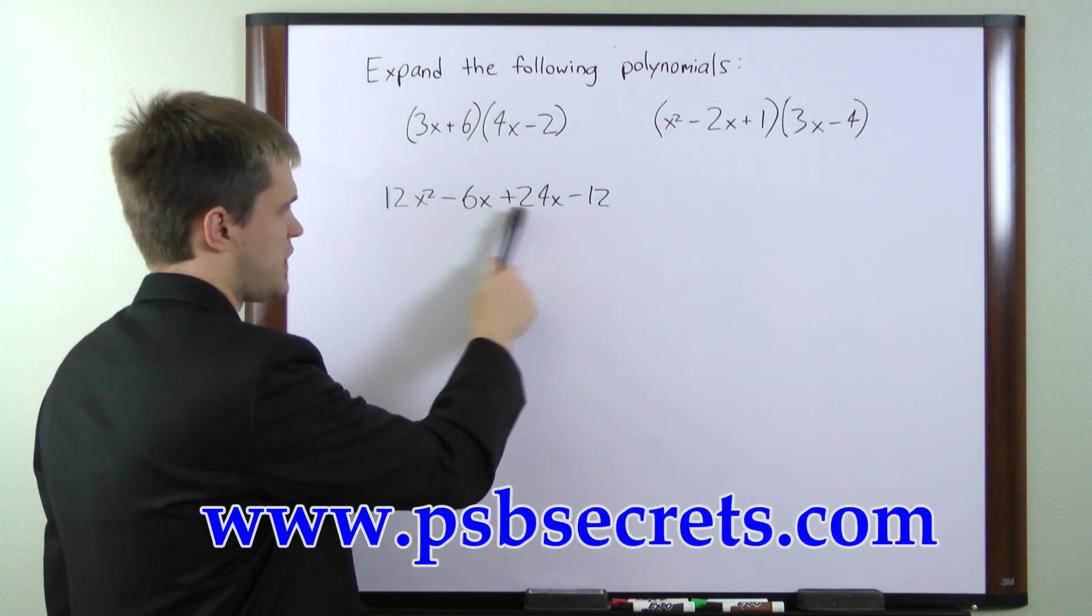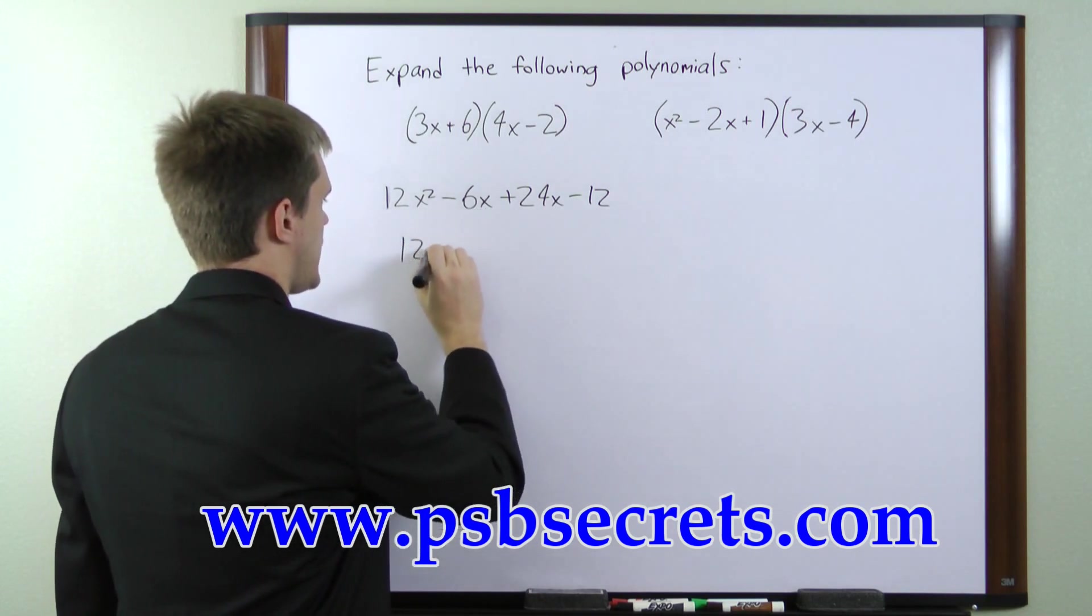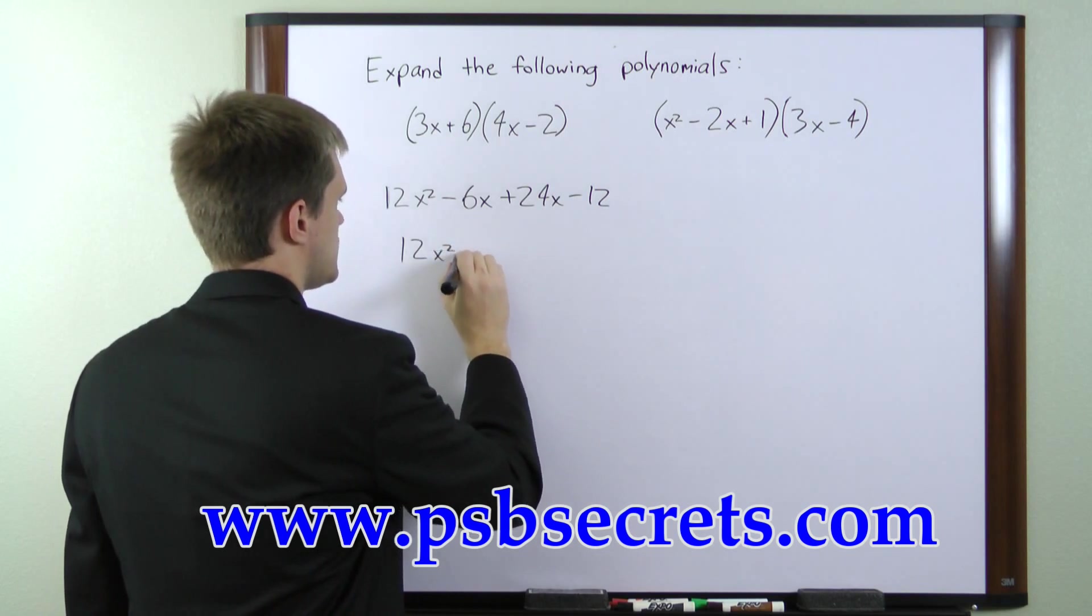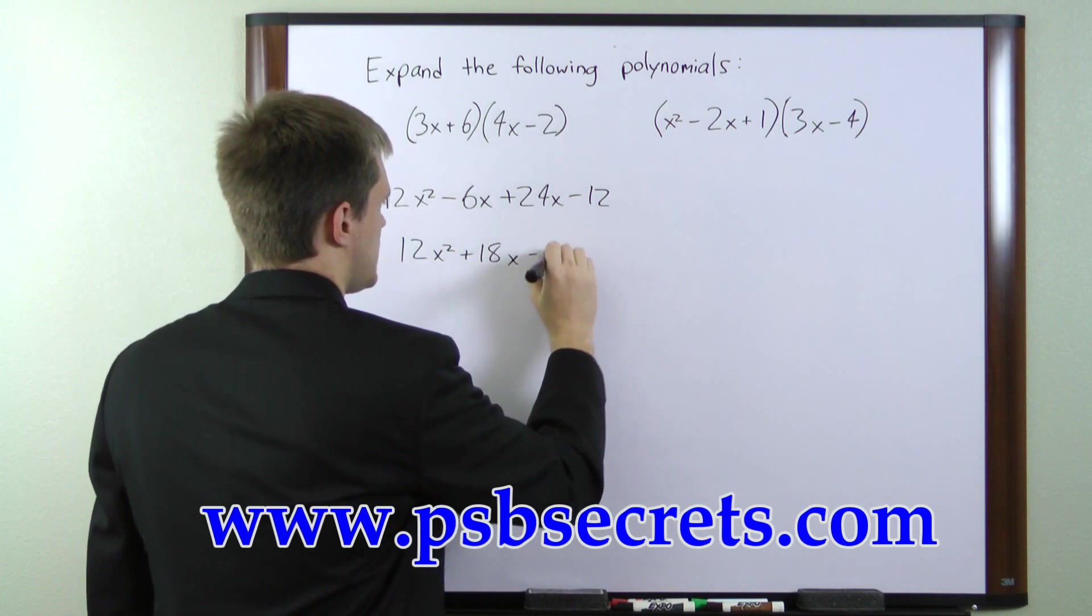We need to combine like terms. We have two x's here, so we'll go ahead and combine those. That gives us 12x squared plus 18x minus 12.